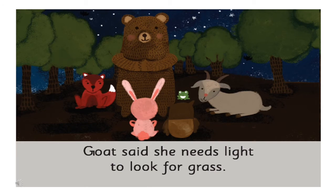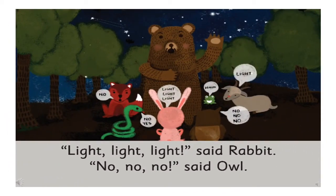Why does goat need light? Because goat needs light to look for grass. What does rabbit keep saying again and again? Rabbit keeps saying light, light, light because he wants light. Does owl agree with rabbit? No, owl does not agree with rabbit. Why does owl not agree with rabbit? Because owl wants dark and rabbit wants light. Owls are generally active during the night and they can see better at night. So that is why owl does not want light.